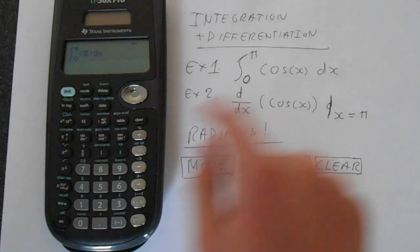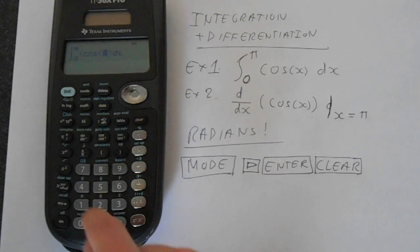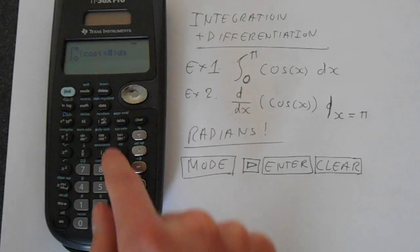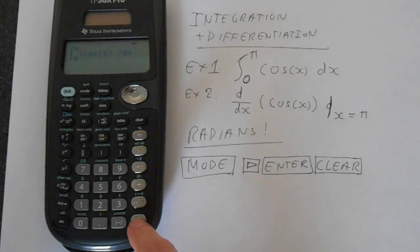Then put in cos which is down here, and the variable is across here. Remember to close the brackets and press enter.